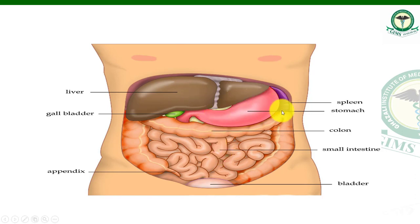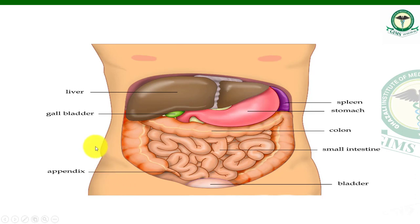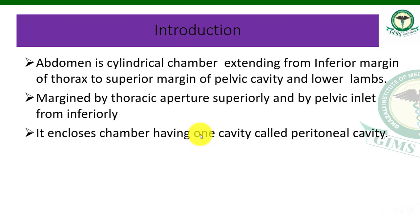The abdominal cavity contains different organs: the stomach, spleen, colon, small intestine, large intestine, bladder, appendix, liver, and gallbladder. These are all the organs included in the abdominal cavity.